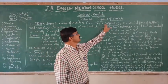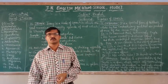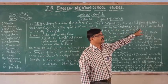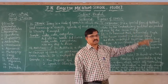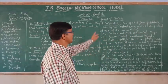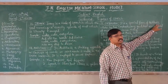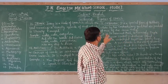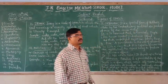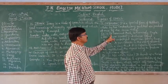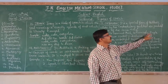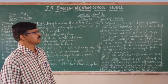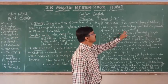Next, the 13th figure of speech is oxymoron. Oxymoron is a special form of antithesis whereby two contradictory qualities are predicted at once of the same thing. Example: 'So innocent, so cunningly simple.' Here, 'innocent' and 'cunning' are contradictory qualities predicted of the same thing.